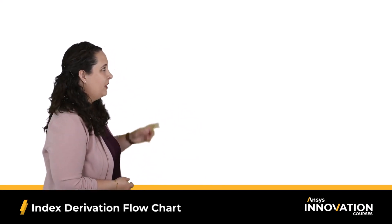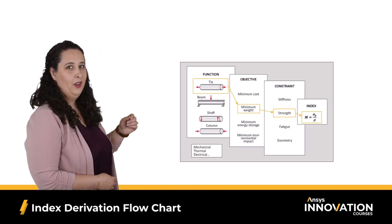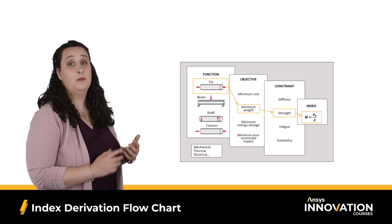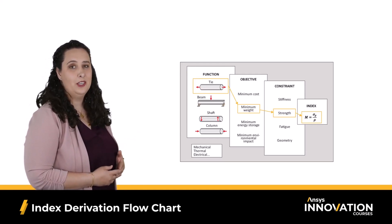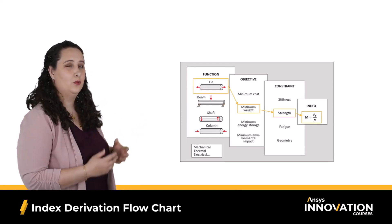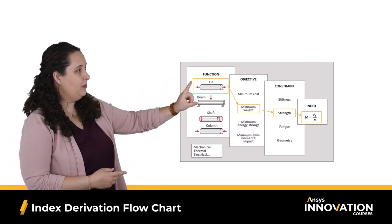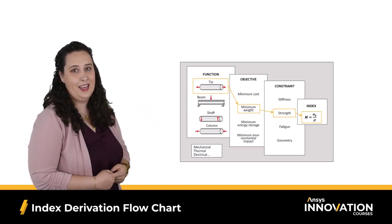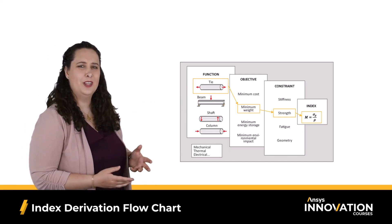Let's show that workflow from the end of lesson one on our screen again. Here we see how the function, constraints, and objectives we identified during our translation step are used to derive our performance index. Each of these steps identifies an expression that we combined to get that index at the end. But what does this look like exactly?